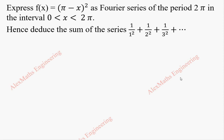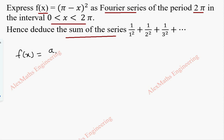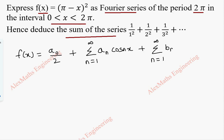Hi students, this is Alex here. In this video we are going to express f of x as a Fourier series of period 2 pi in the interval (0, 2 pi) and we are going to deduce the sum of the series. The expansion formula for the Fourier series is f(x) = a₀/2 + Σ(n=1 to ∞) aₙ cos(nx) + Σ(n=1 to ∞) bₙ sin(nx).